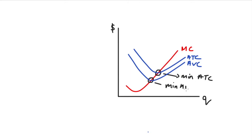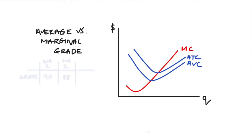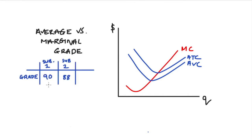The most common way to explain this relationship to students is to initially not think about costs at all, but to ask students to consider the relationship between their average grade at school and their marginal grade for each additional subject they take. Then we can generalize this relationship back to marginal and average costs. So let's do that.